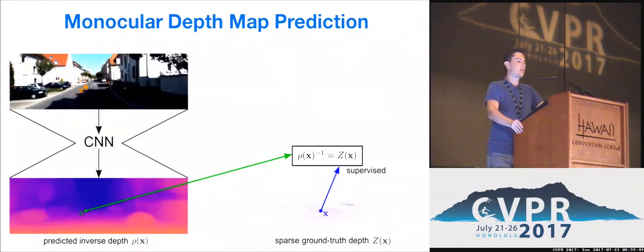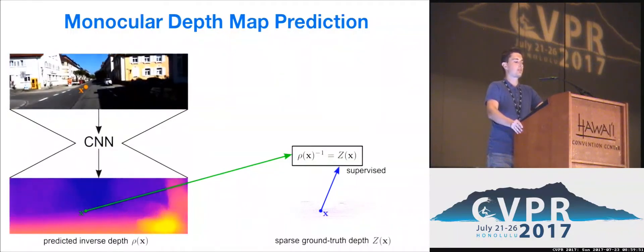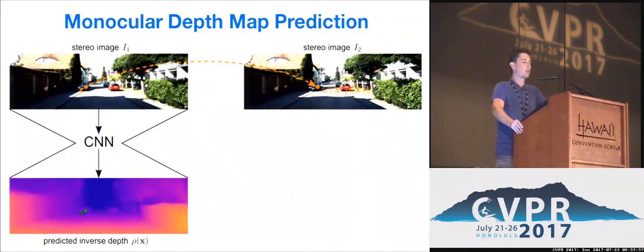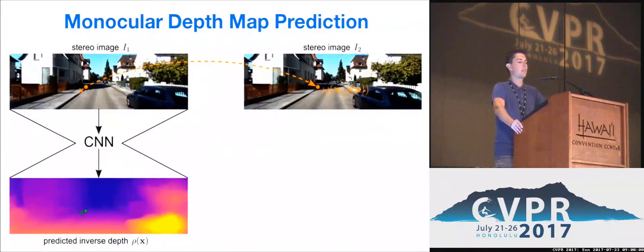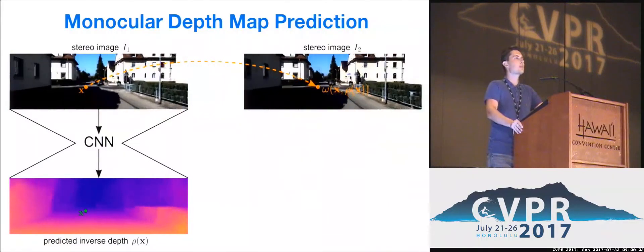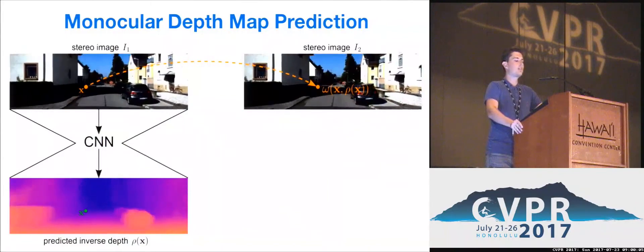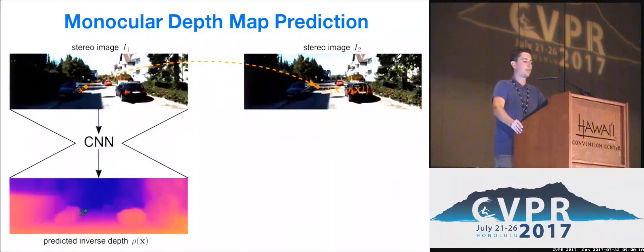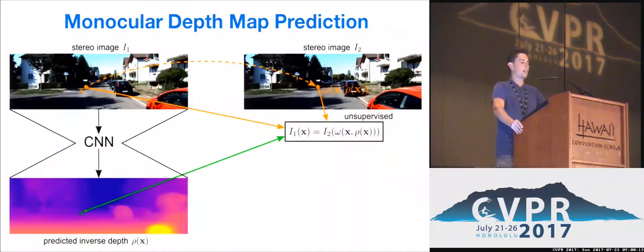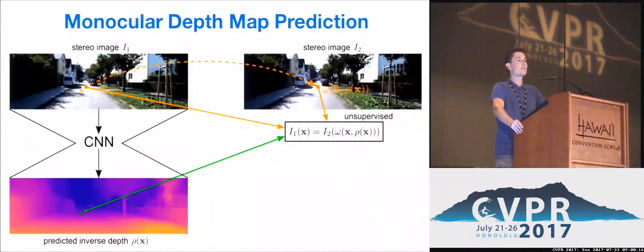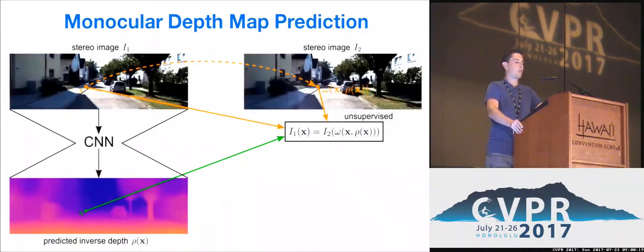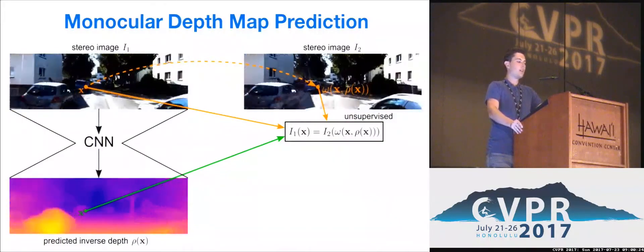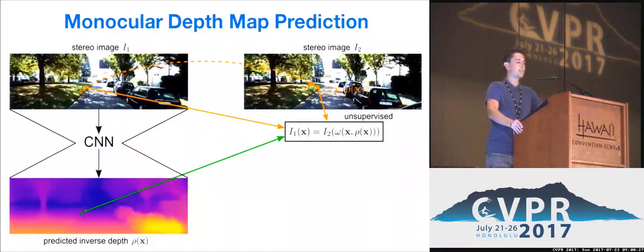Alternatively, in the rectified stereo setup, one frame can be reconstructed from another using the predicted inverse depth map. For this, we also need to know the focal length of the cameras and the baseline in order to transform inverse depth into disparity. Then, the additional information about the environment is obtained by enforcing photoconsistency between the frame and its reconstruction. This is referred to as unsupervised learning of depth. While it solves the problem of absent ground truth for the upper image part, information obtained from photoconsistency constraints is ambiguous itself. There also appear problems in low-textured and low-intensity areas.